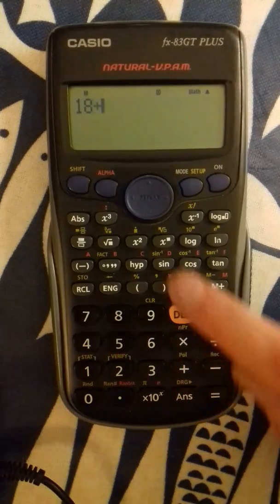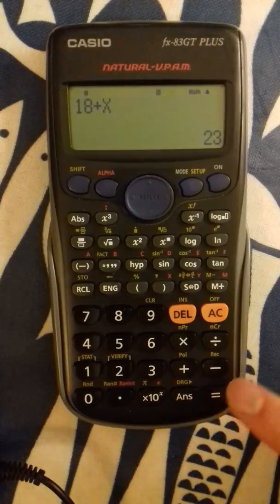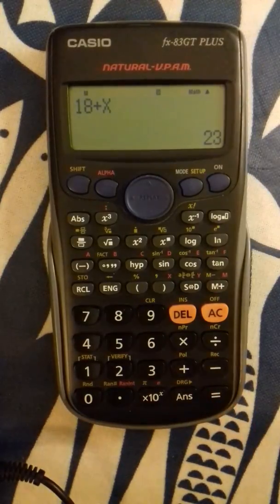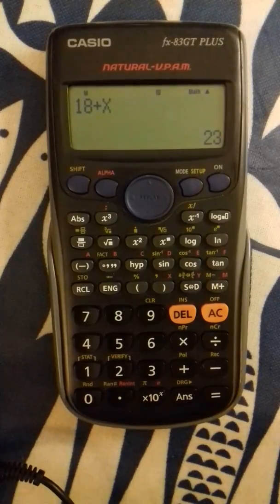18 plus alpha x equals 23. So now I can write on my paper 18 plus x equals 23. We're starting with a simple one.